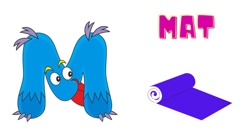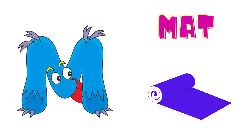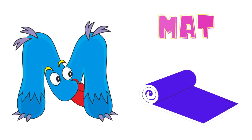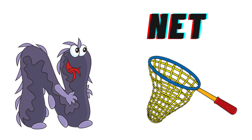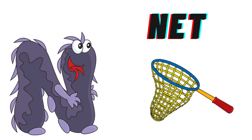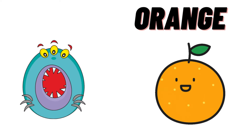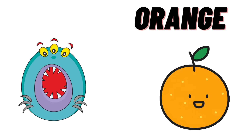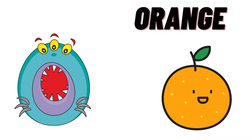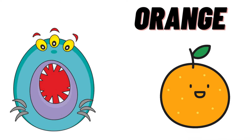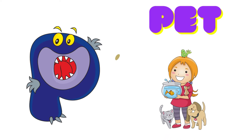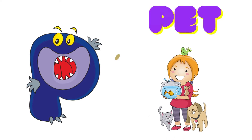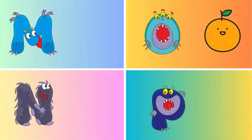M is for Mat, M-M-Mat. N is for Net, N-N-Net. O is for Orange, O-O-Orange. P is for Pet, P-P-Pet.